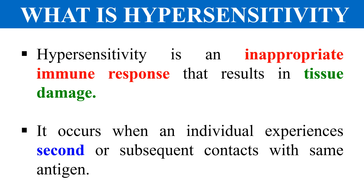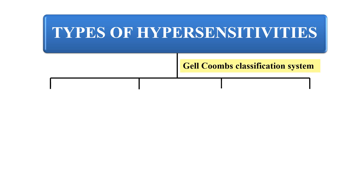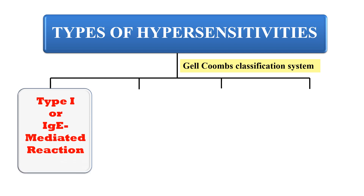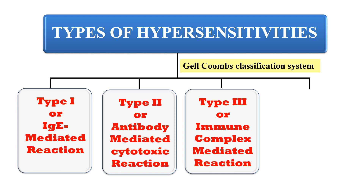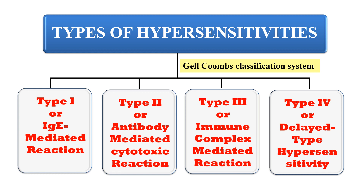Generally, hypersensitivity occurs when the antigen comes a second time into the body. During the first exposure there is generally no response, but when the same allergen enters the body a second time, hypersensitivity reactions develop. Hypersensitivities are divided into four types: type 1 or IgE-mediated hypersensitivity, type 2 or antibody-mediated cytotoxic reactions, type 3 or immune complex-mediated reactions, and type 4 or DTH — delayed type hypersensitivity.